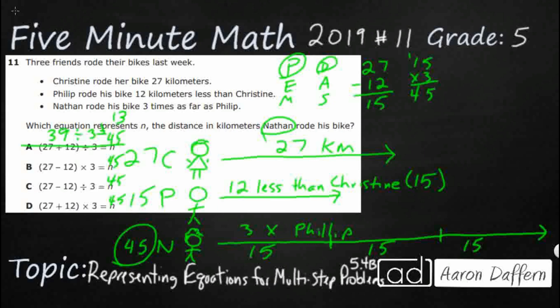So B, 27 minus 12, that is 15, which is what we did, we got 15 from Phillip, we multiplied that by 3, 15 times 3, okay, B is looking good, let's just double check C and D.